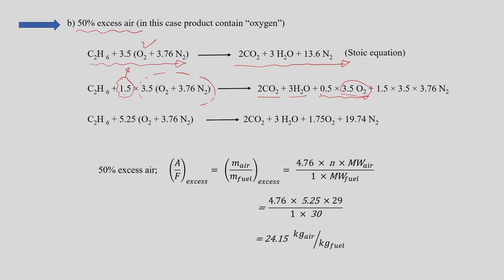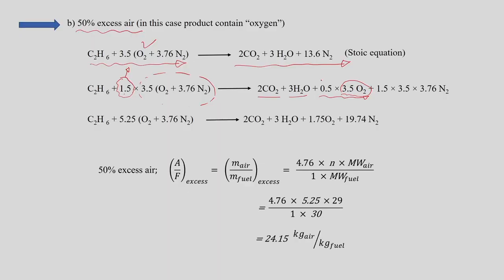Why 0.5 × 3.5? Because in complete combustion, the theoretical oxygen is fully used to produce CO2 and H2O. The 50 percent excess air comes out as 0.5×3.5 moles of O2 and 1.5×3.5×3.76 moles of nitrogen. Nitrogen is not participating in the reaction, so all of it passes through.